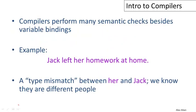Compilers perform many semantic checks besides analyzing the variable bindings. Here's another example in English: Jack left her homework at home. And under the usual naming conventions, assuming that Jack is male, we know there's a type mismatch between Jack and her. So we know that whoever her is, it is not Jack. Therefore, we know that this sentence is talking about two different people. This is analogous to type checking.